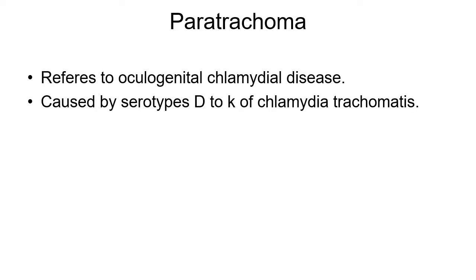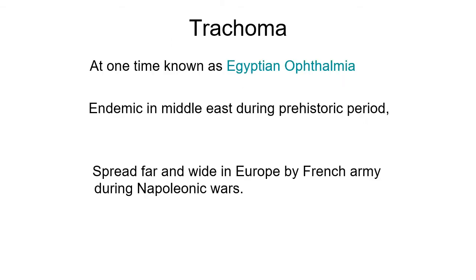Paratrachoma refers to oculogenital chlamydial disease caused by serotypes D to K of Chlamydia trachomatis. This topic can be asked as a short note in your theory examination and is important from the viva point of view, particularly regarding the SAFE strategy. You should also know about the drugs given free of cost to the developing world for prevention.